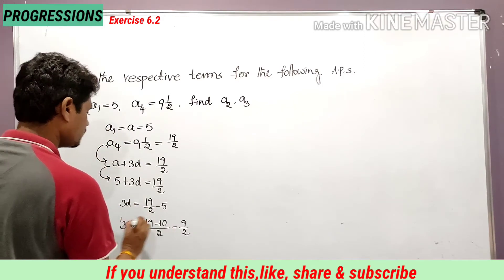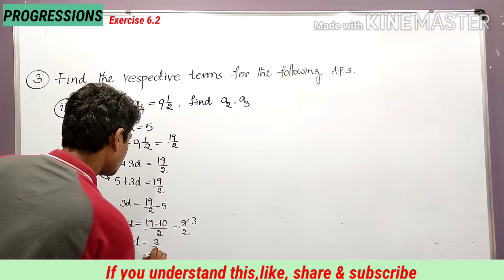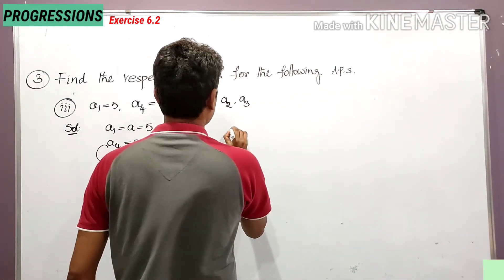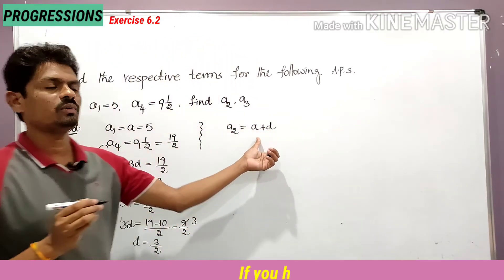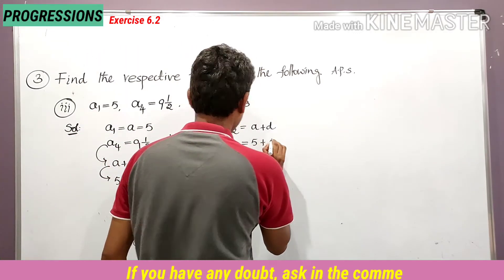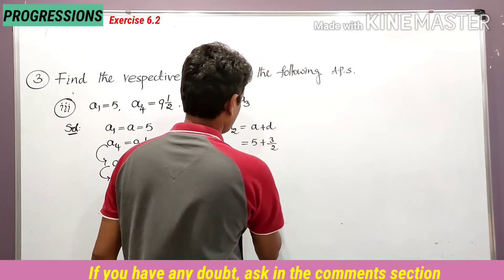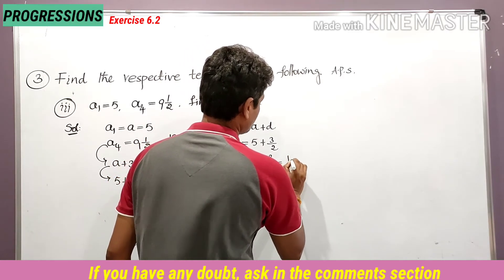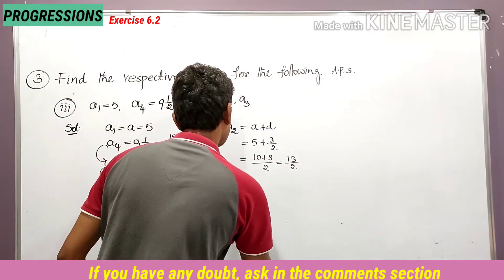Now find a2 and a3. a2 is equal to a plus d: substituting a equal to 5 and d equal to 3 by 2, we get 5 plus 3/2. Finding LCM: (10 plus 3) divided by 2, which is 13 by 2. So a2 is equal to 13 by 2.